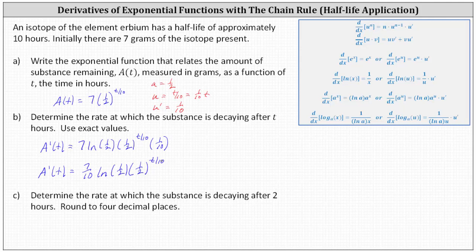Finally for part C, we're asked to determine the rate at which the substance is decaying after two hours. We're told to round to four decimal places. To answer this question, we need to determine A prime of two.